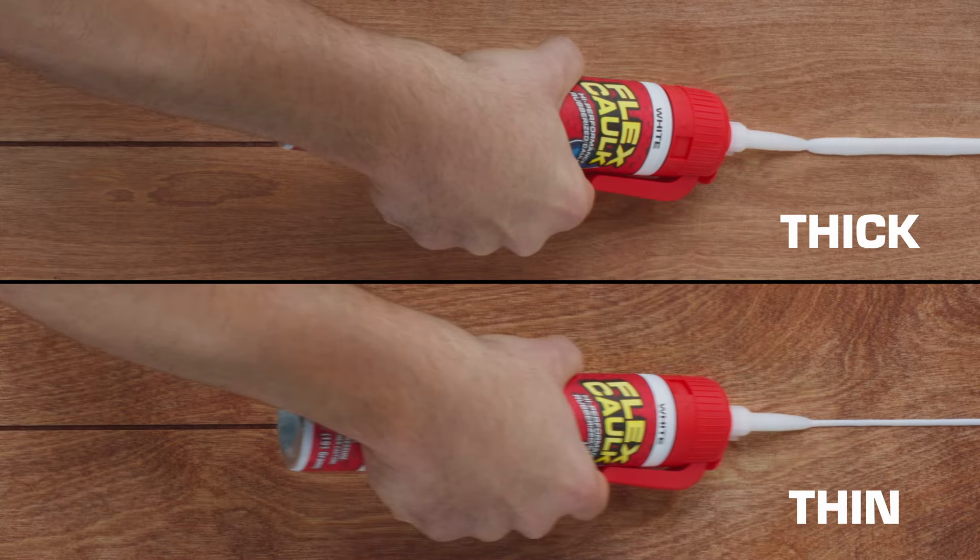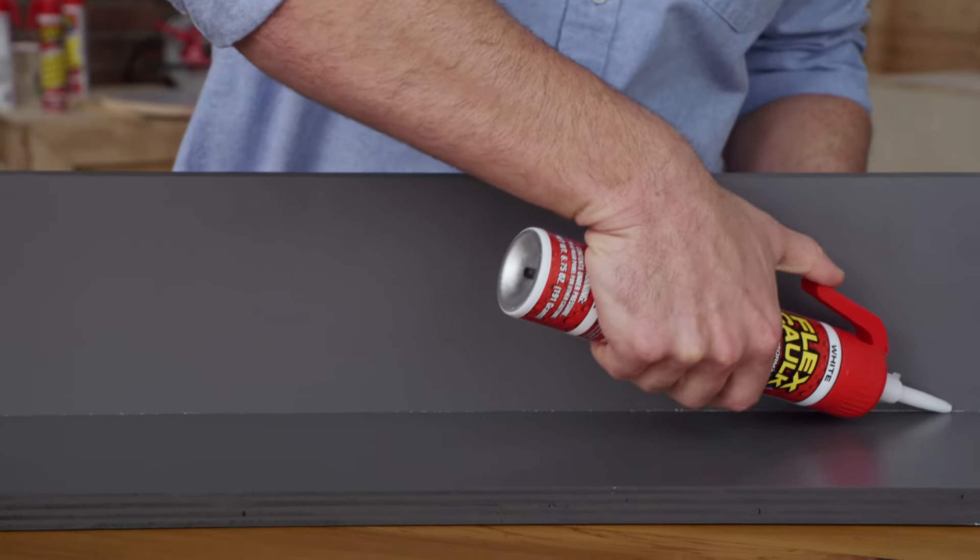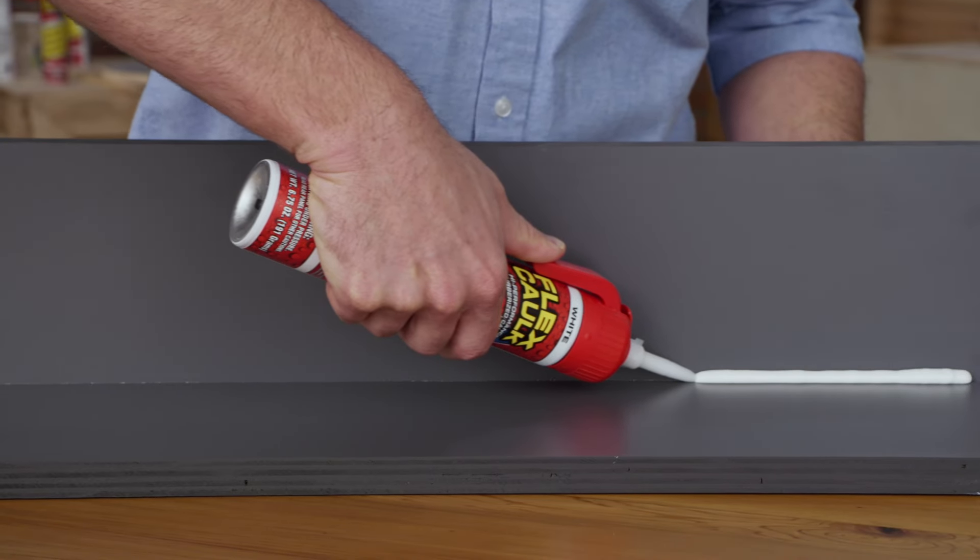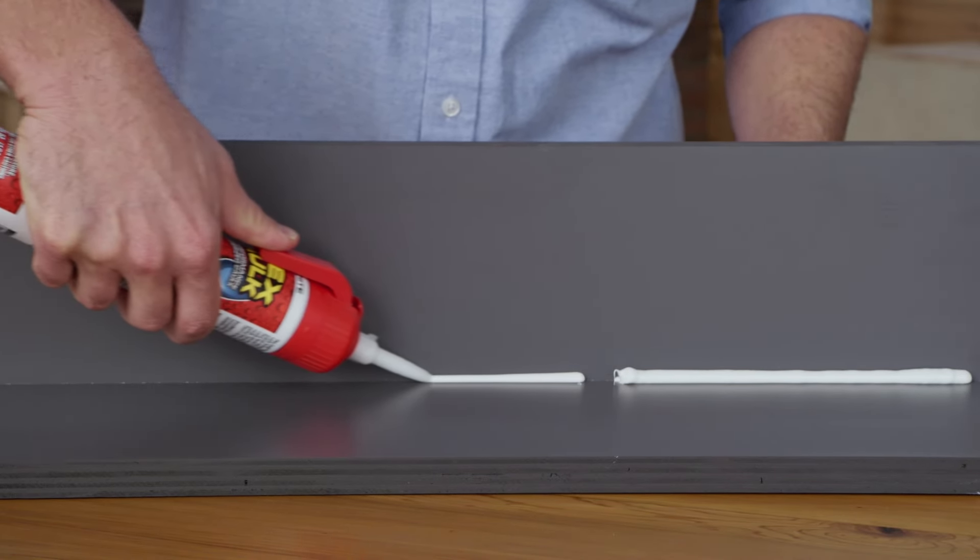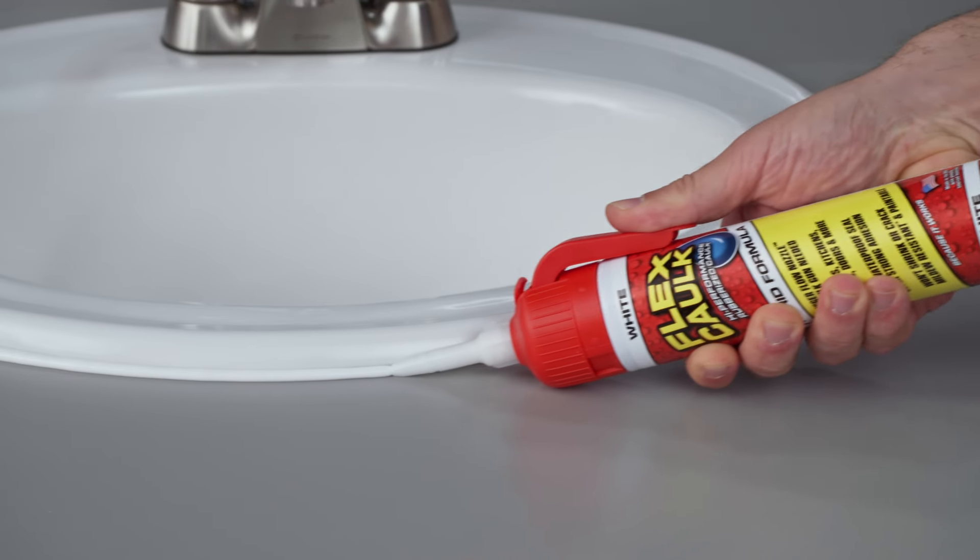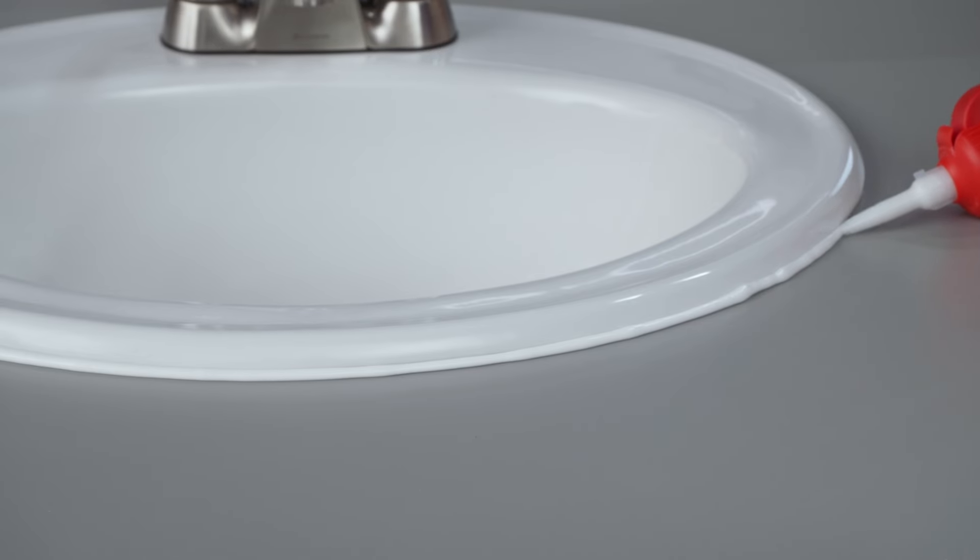The size of the bead is based on two things: the amount of flow and the speed you move as you caulk. As you can see, if you move slowly, you'll get a thicker bead. And if you move more quickly, you'll get a thinner bead. For a perfect bead, hold flex caulk at a 45-degree angle.